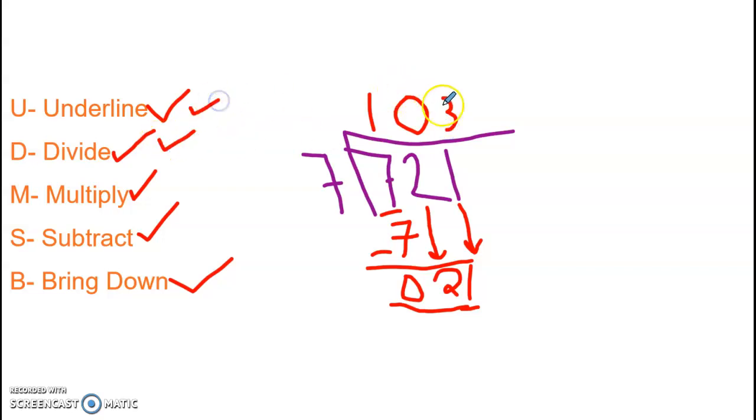I know that 21 divided by 7 is 3. Divide. Underline. I know 3 times 7 is 21. Got to subtract. 0. Love when I end in a 0. And I have nothing to bring down. Love it. I'm done.